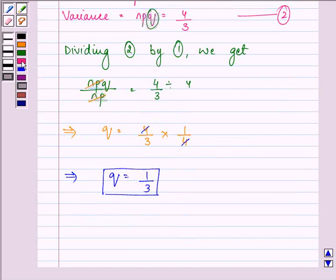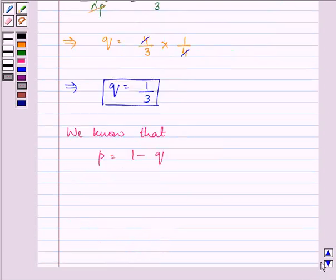Now, further, we know that p is equal to 1 minus q. So if q is 1/3, then the value of p will be equal to 2/3.